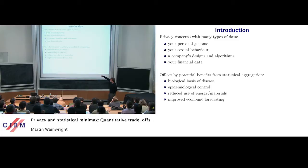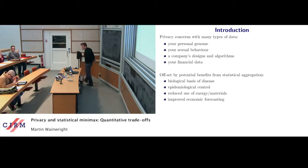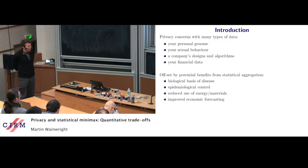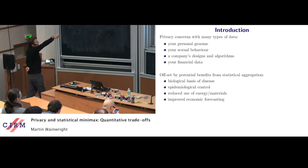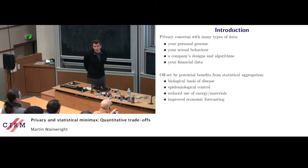With genetic data, we're getting much better understanding of the biological basis of disease. With sexually transmitted diseases, data is important for epidemiology. At the company level, if companies share better designs for making chips, they can collectively make chips that are more power efficient. So you have a trade-off between privacy at an individual level and gains at a broader societal level. We'd like to characterize this trade-off and understand it in more detail.